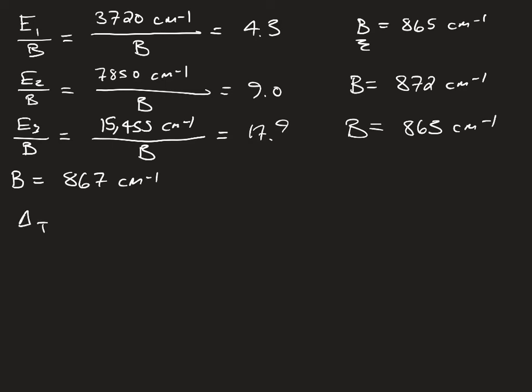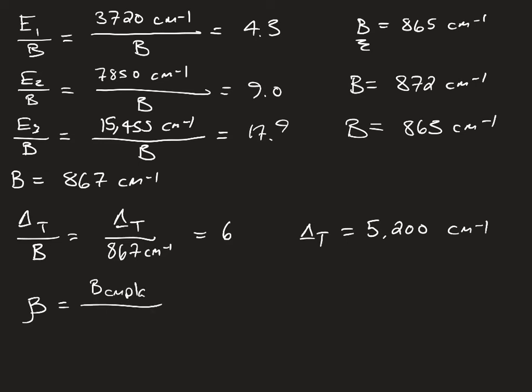Calculating delta T over B. This equals delta T over 867 wave numbers, which we set equal to 6. So delta T is equal to 5,200 wave numbers.